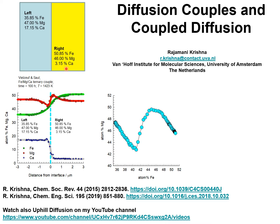Garnets are nesosilicates, a group of silicate minerals that have been used since the Bronze Age as gemstones and abrasives. A diffusion couple with two different compositions on the left and right hand sides are brought into contact at time t0. The composition profiles on either side of the interspace marker, shown by the dashed lines, are monitored at various time intervals.